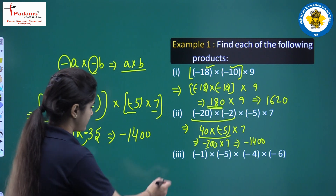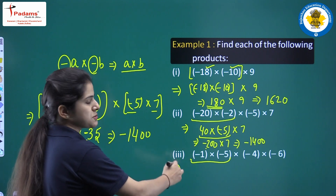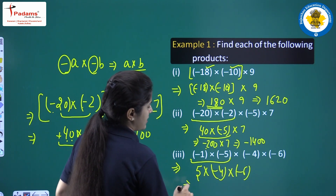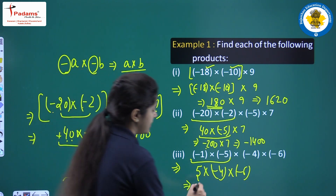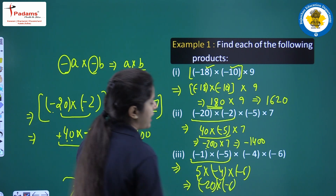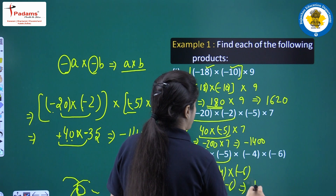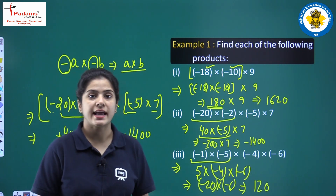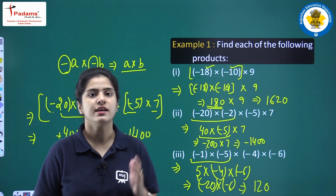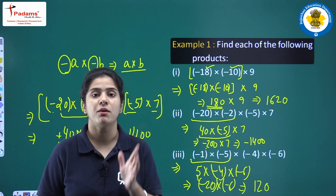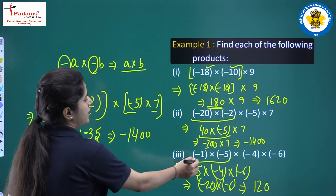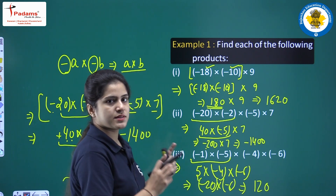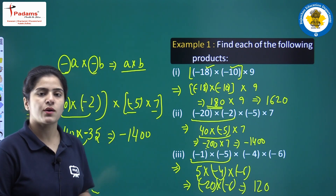We will do the third part now. Minus 1 multiply minus 5 equals 5. Then 5 into minus 4 equals minus 20. Minus 20 into minus 6 equals 120. Counting the negative integers: 1, 2, 3, and 4 — they appear 4 times, which is even. So the product will have a positive sign. 1 into 5 equals 5, minus times minus is plus; 4 into 6 equals 24, minus times minus is plus; so 5 into 24 equals 120. This was all about the first question.